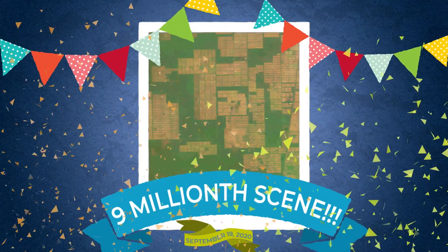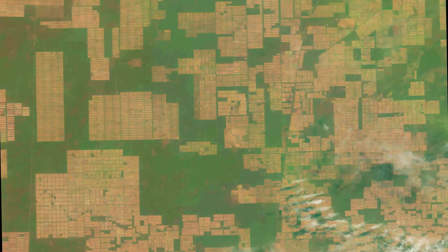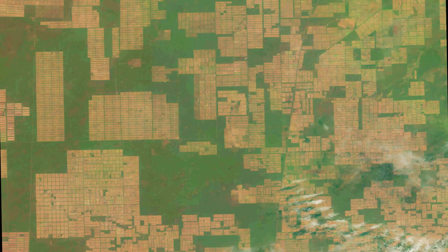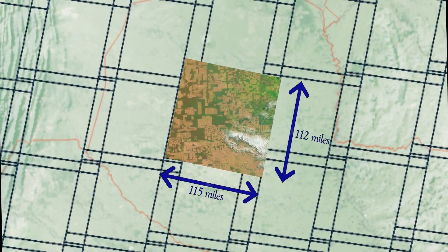Landsat archives its 9 millionth scene. Each scene is a satellite image from space, about 115 miles wide.